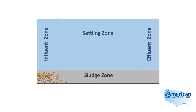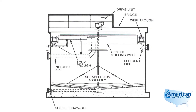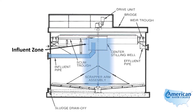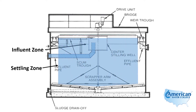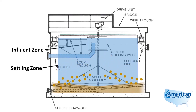Here we have pictured a round clarifier, or circular clarifier. The water comes in through the influent into the center stilling well — this is the influent zone. The water then leaves the stilling well and moves outward through the settling zone as the settleable particles settle out and enter the sludge zone down at the bottom of the clarifier.